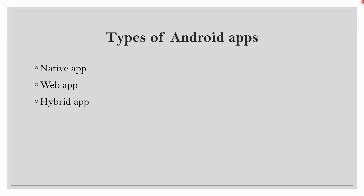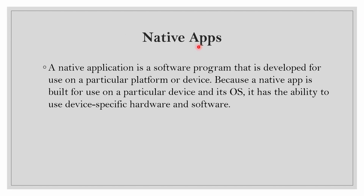There are three types of Android apps: native apps, web apps, and hybrid apps. A native application is a software program developed for use on a particular platform or device. A native app built for Android will be used only on Android — it cannot be used on iOS.